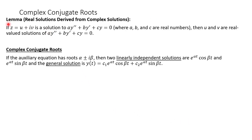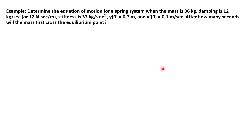Next, let's talk about a lemma and a resulting fact about complex conjugate roots. The lemma says: if z = u + iv is a solution to our second order linear homogeneous differential equation, then u and v are real-valued solutions to this equation. This leads to the key result: if the auxiliary equation has roots alpha ± i·beta, then two linearly independent solutions are e^(alpha·t)·cos(beta·t) and e^(alpha·t)·sin(beta·t), and the general solution is y = c₁·e^(alpha·t)·cos(beta·t) + c₂·e^(alpha·t)·sin(beta·t).